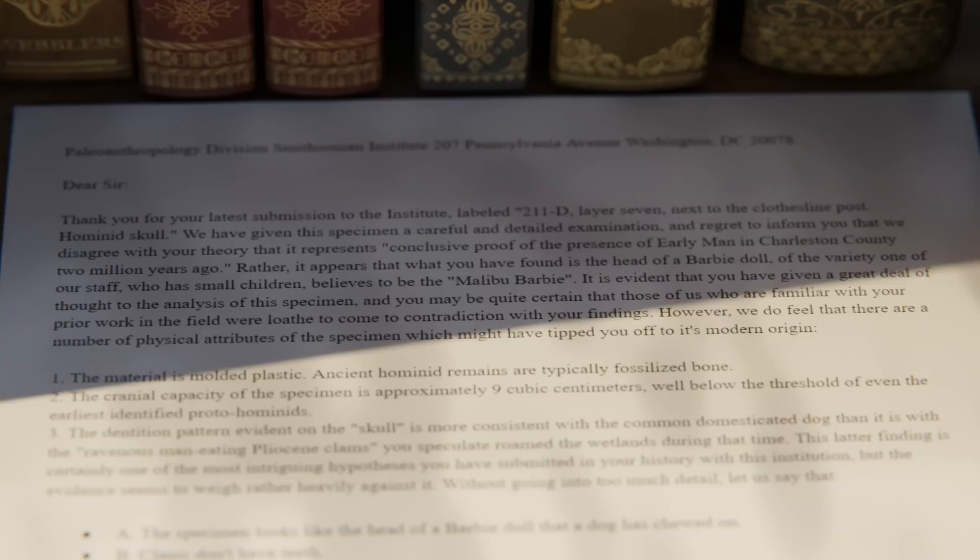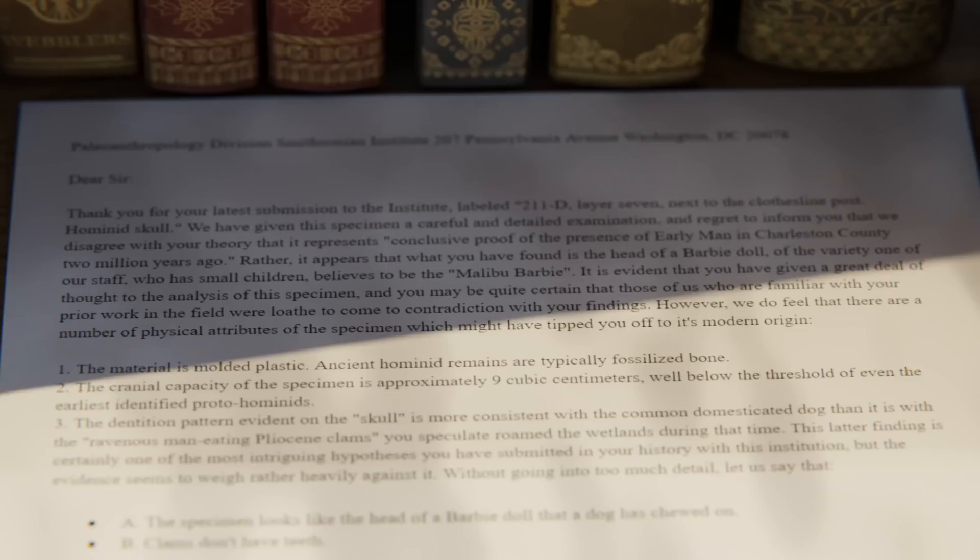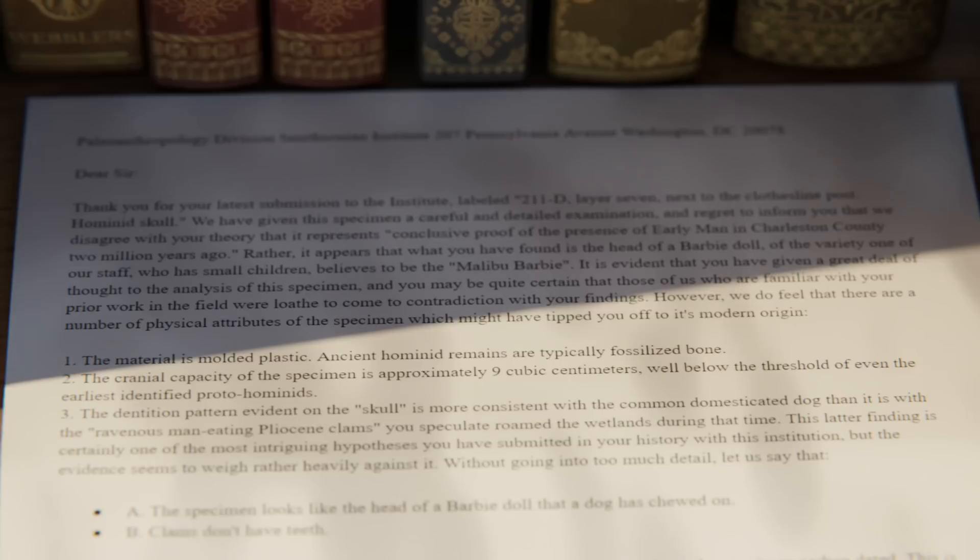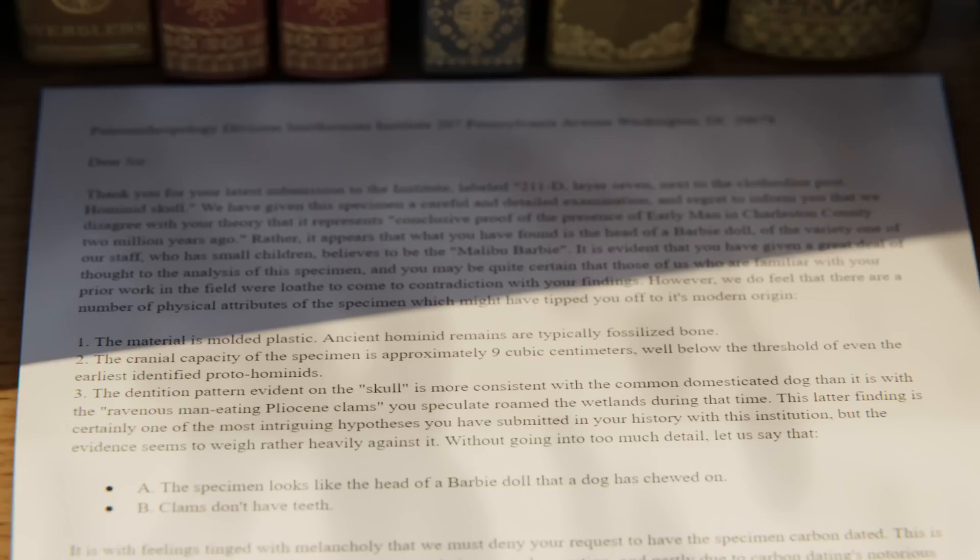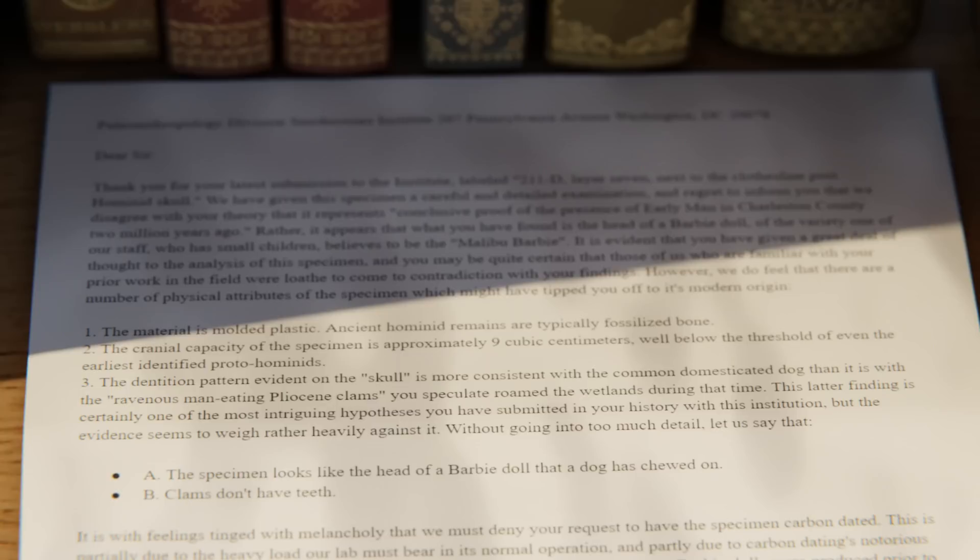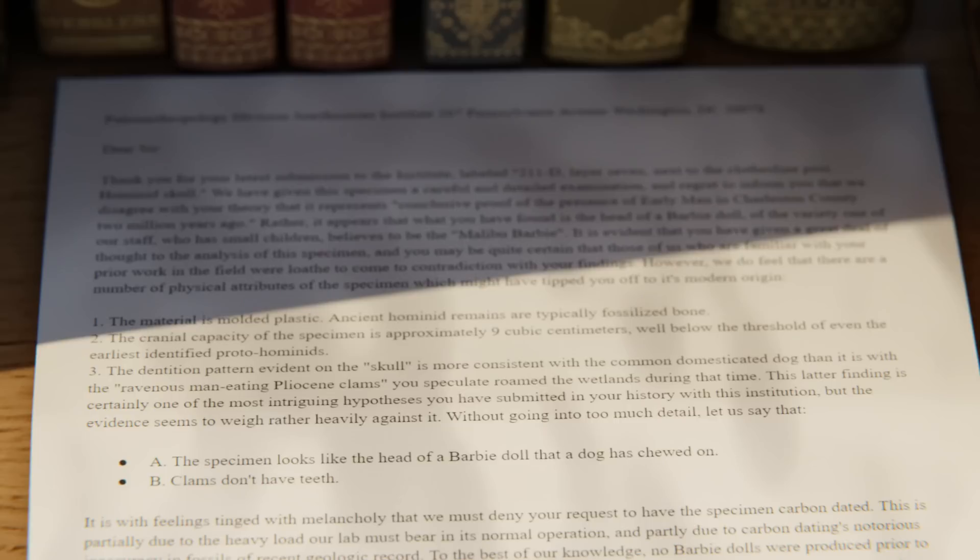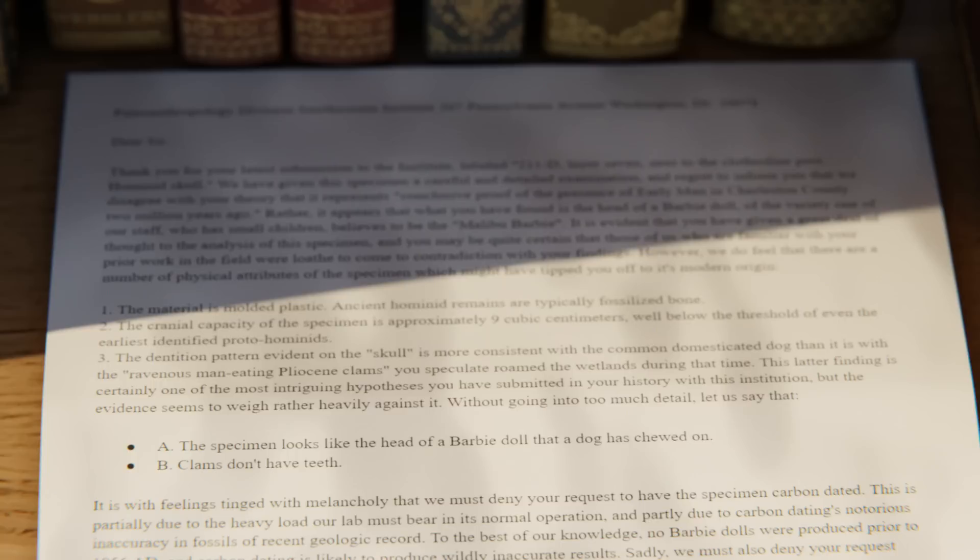1. The material is molded plastic. Ancient hominid remains are typically fossilized bone. 2. The cranial capacity of the specimen is approximately 9 cubic centimeters, well below the threshold of even the earliest identified proto-hominids. 3. The dentition pattern on the skull is more consistent with the common domesticated dog than it is with the ravenous man-eating Pliocene clams you speculate roamed the wetlands during that time. The latter finding is certainly one of the more intriguing hypotheses you have submitted in your history with this institution, but the evidence seems to weigh rather heavily against it. Without going into much detail, let us just say that a) the specimen looks like the head of a Barbie doll that a dog chewed on and b) clams don't have teeth.